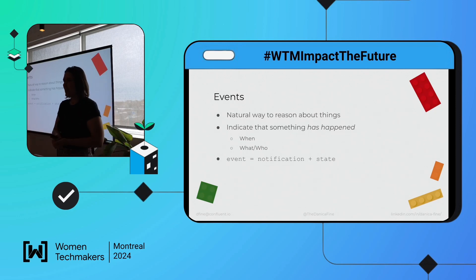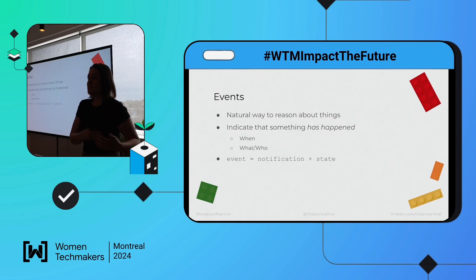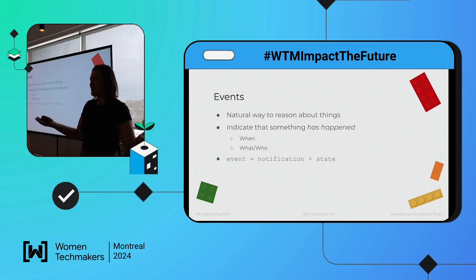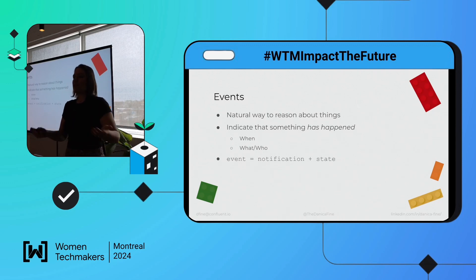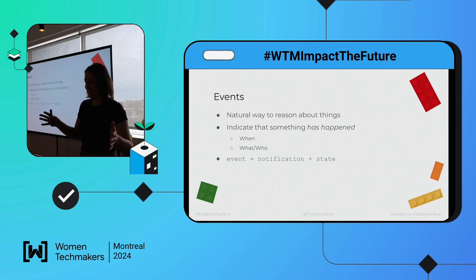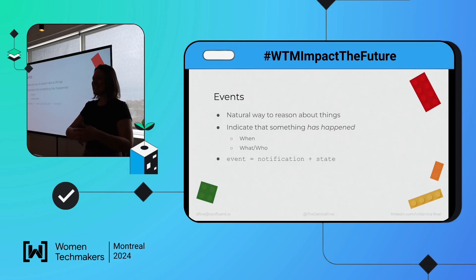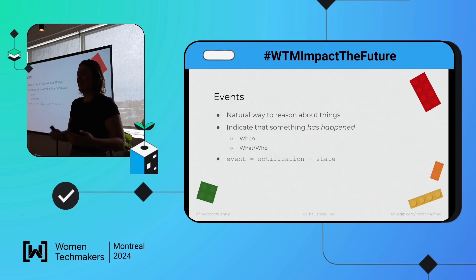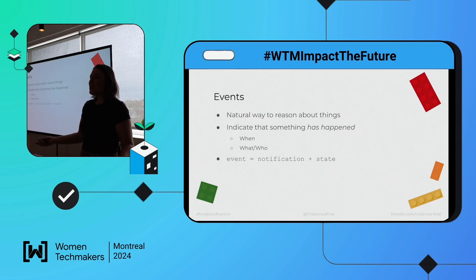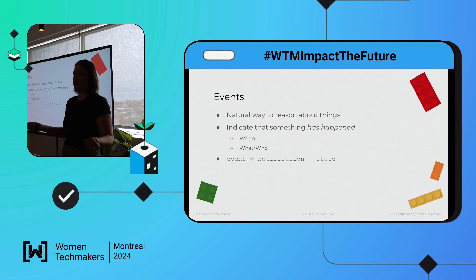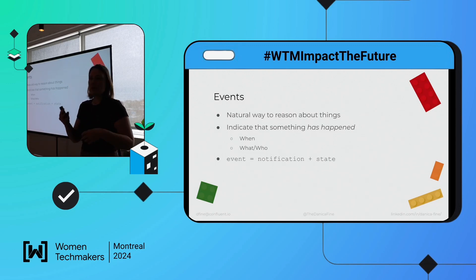Every time you get a message on your phone, every time you look at an application log file to debug something — these are all events. We interact with them in real life. We just have to think about it now when we architect our systems and model our data. So what is an event actually? It's just a thing that happened. That's it. Something happened — so what do we need to know to describe it? We need to know when it occurred — the timestamp.